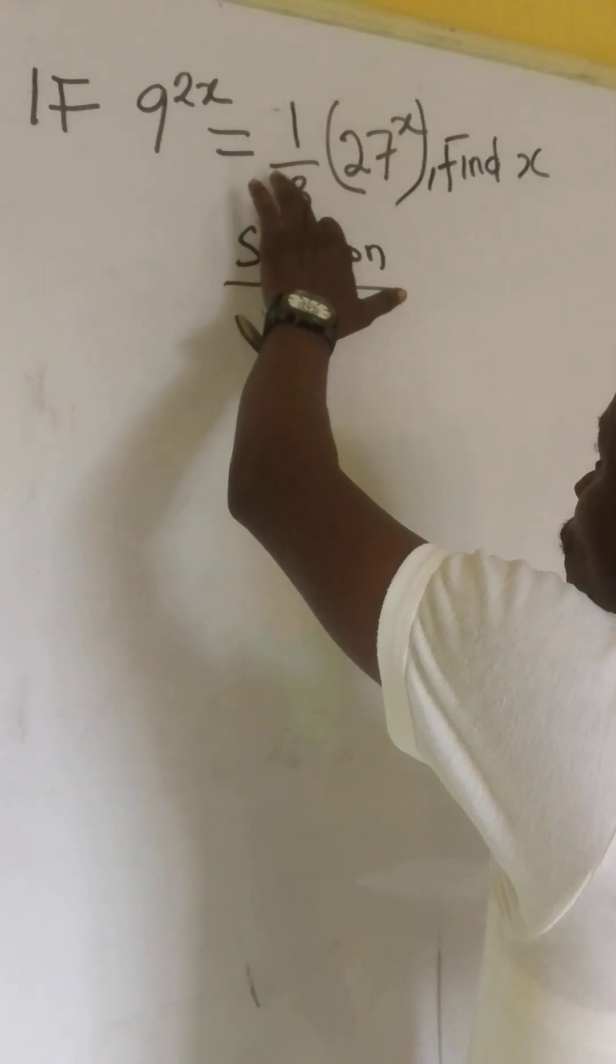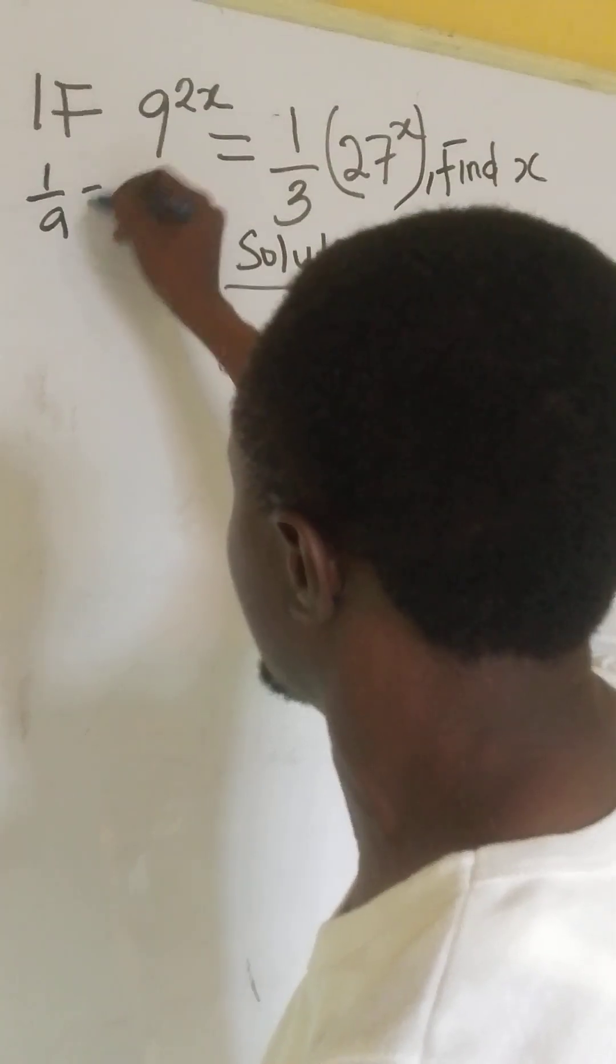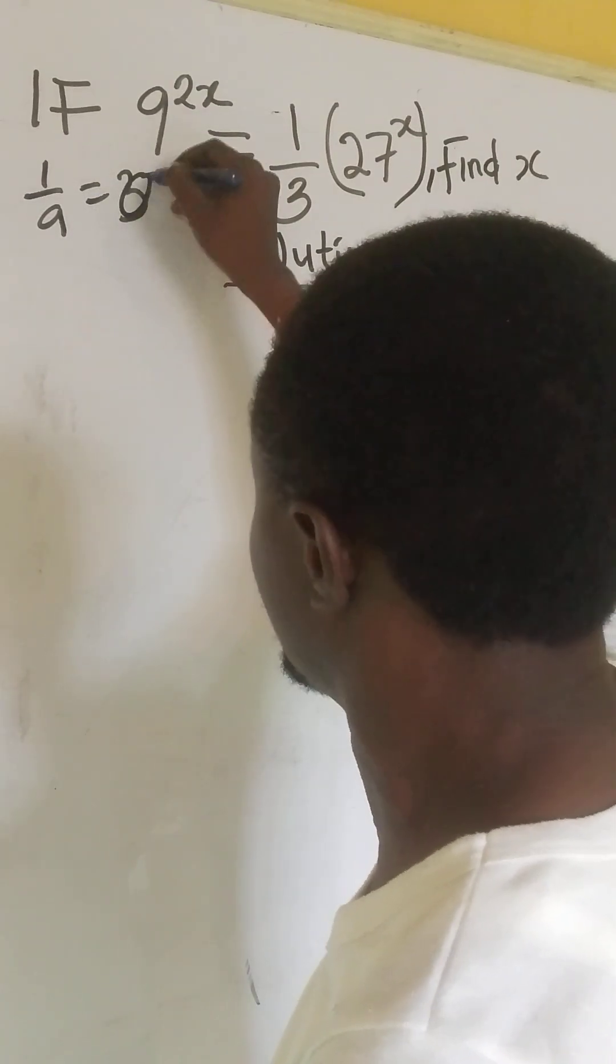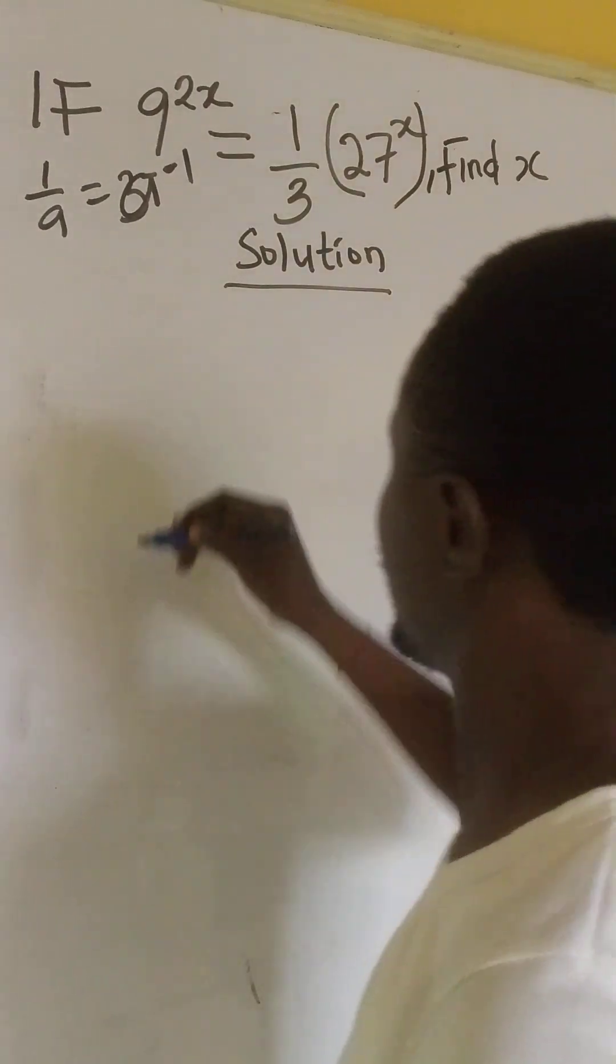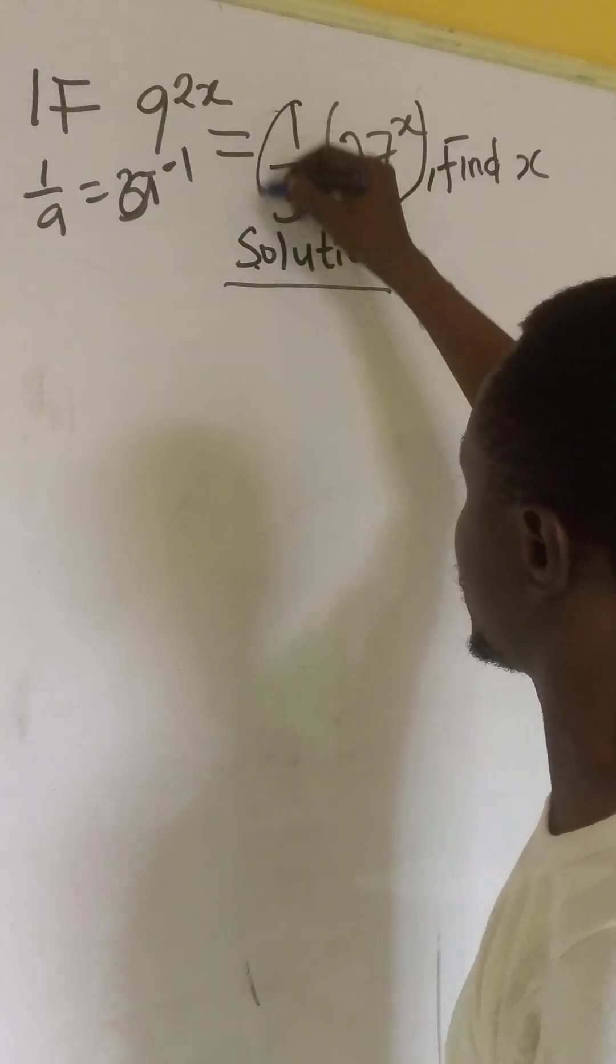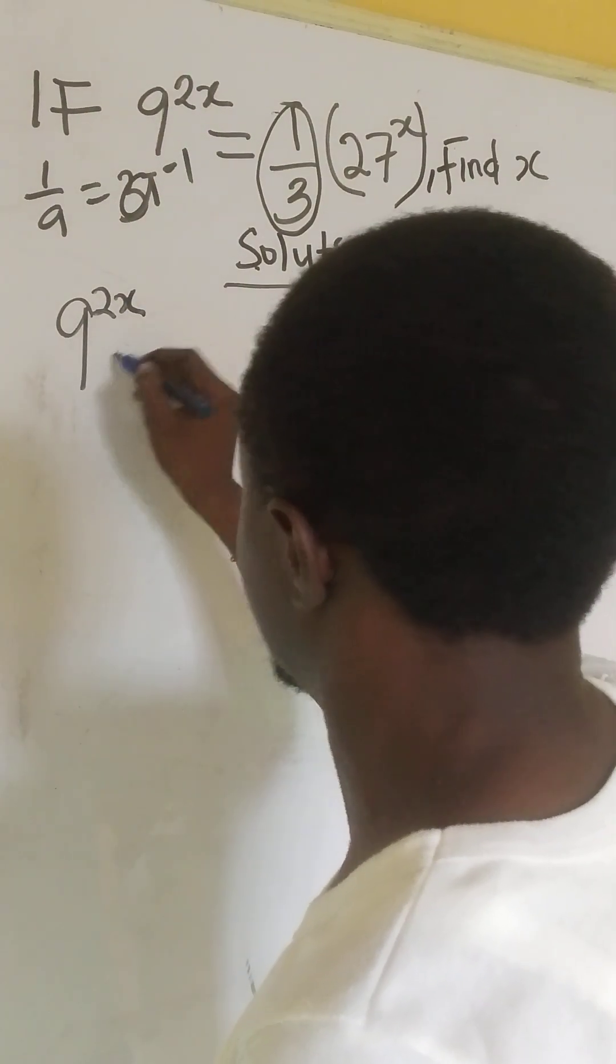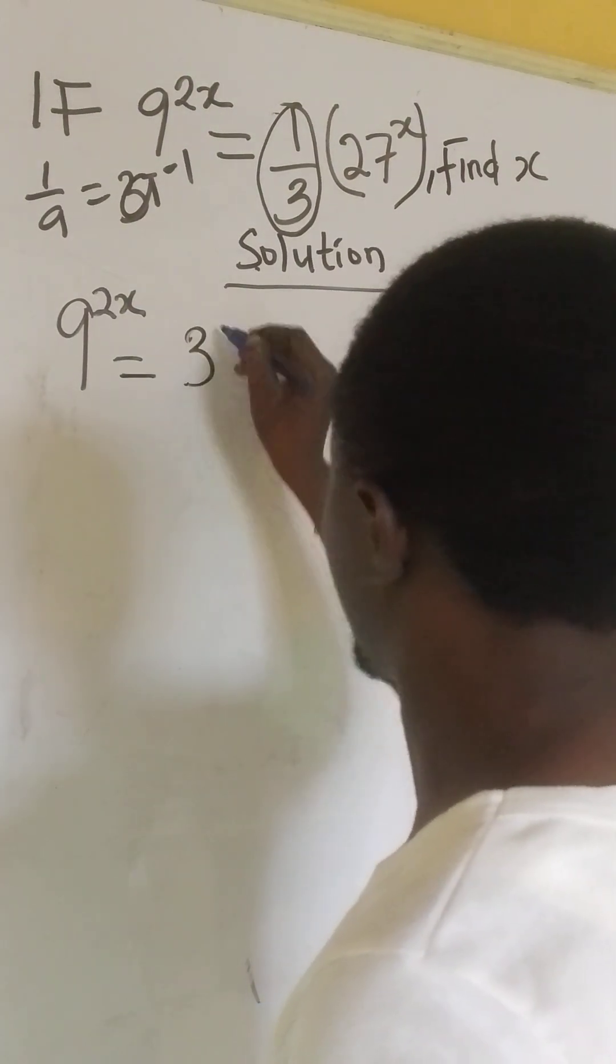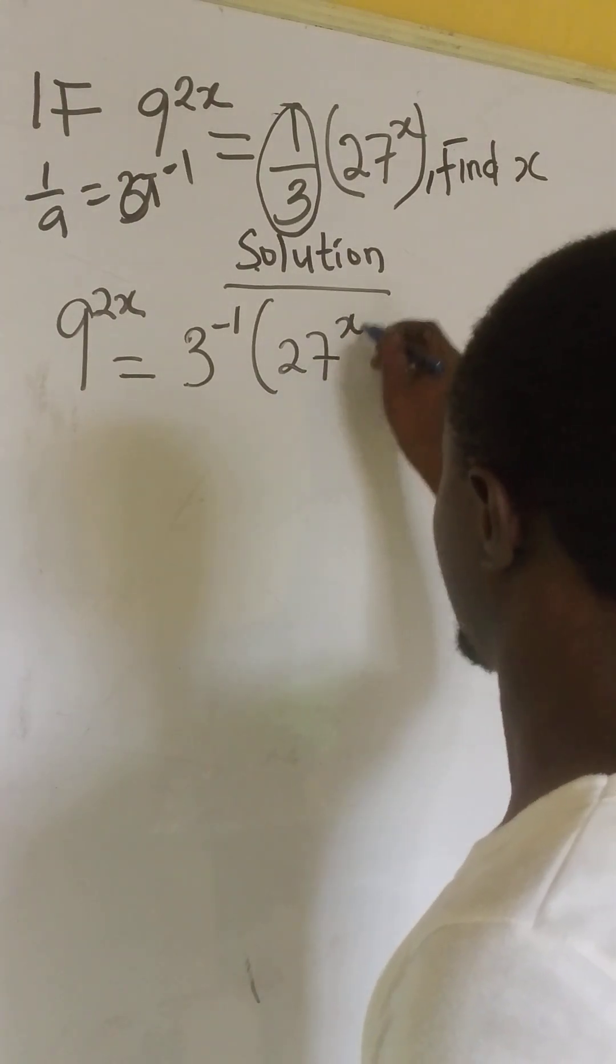I'm going to apply the law of inverse, or the inverse law that says, 1 over a equals to a to the power of minus 1. So, this is the law of inverse. We will apply that to this one here. Then we should have 9 to the power of 2x equals to 3 to the power of minus 1 into brackets, 27 to the power of x.